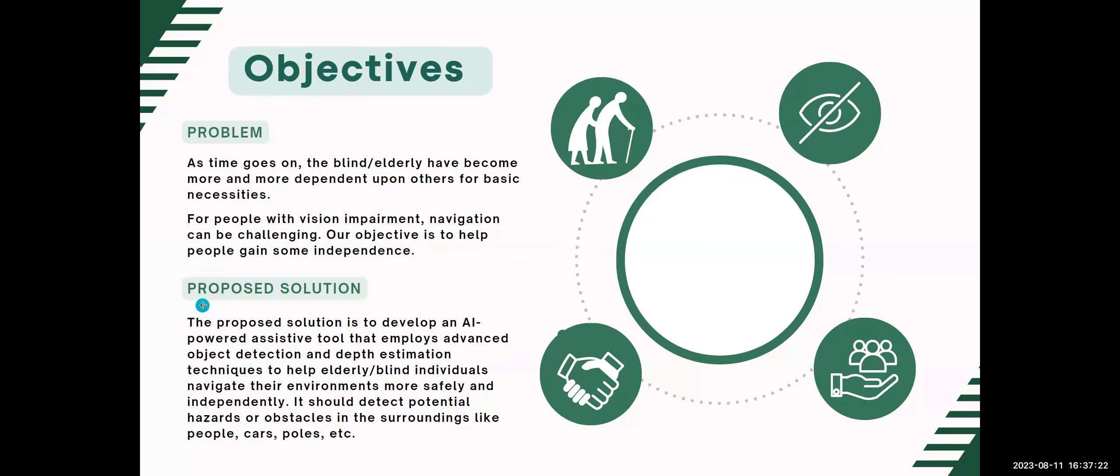We've come up with a solution to develop an AI-powered assistive tool that employs advanced object detection and depth estimation techniques to help the blind and elderly individuals navigate their environments more safely and independently. We want this model to detect potential hazards or obstacles in the surrounding, like people, cars, poles, or any common everyday object you could find when you walk the street.